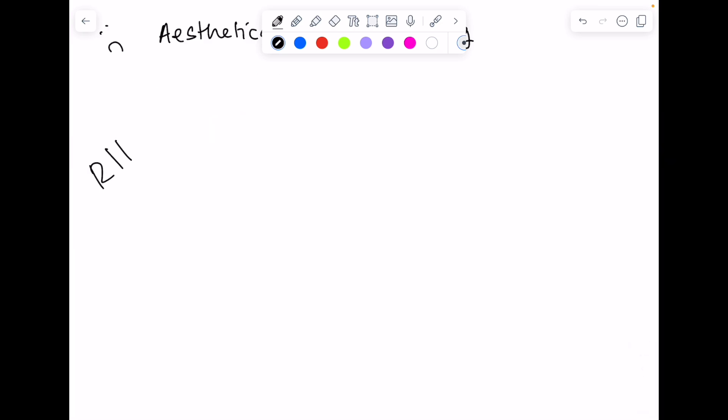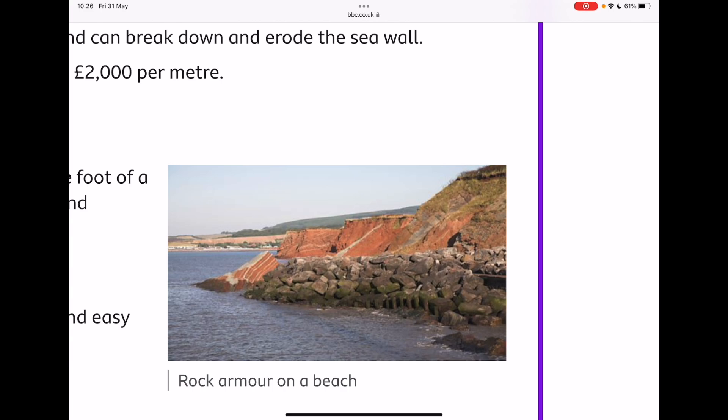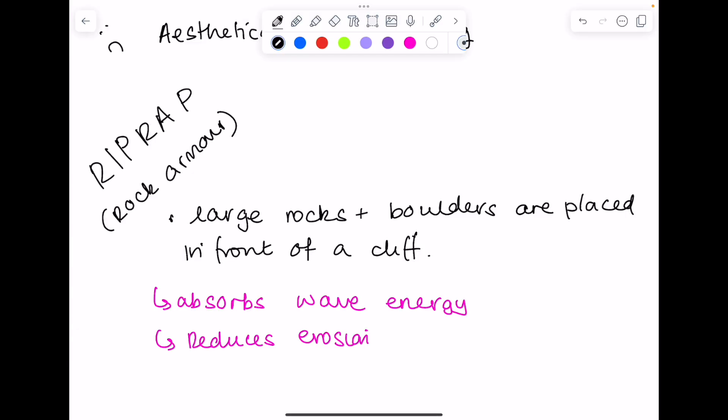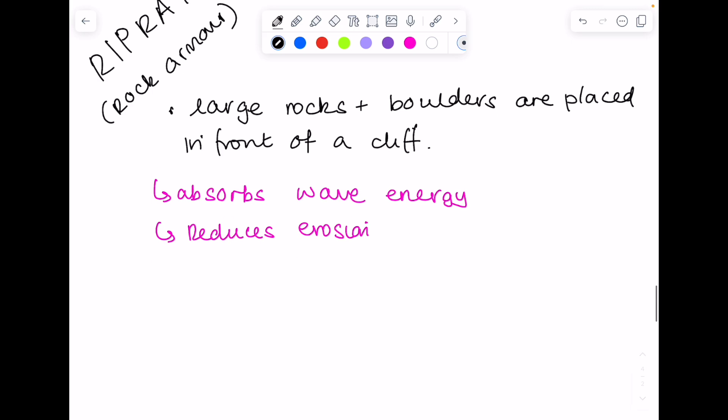Last up, riprap or rock armour. Large rocks or boulders are placed in front of the cliff. They act to absorb wave energy, reducing erosion. People tend to find this more aesthetically pleasing because they look more natural than a concrete wall. But a disadvantage is that strong waves can cause the boulders to move, meaning they need to be replaced.